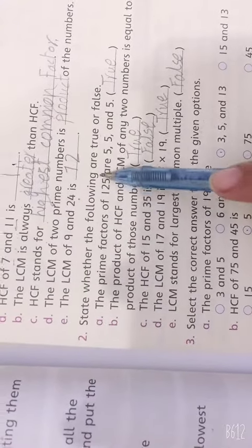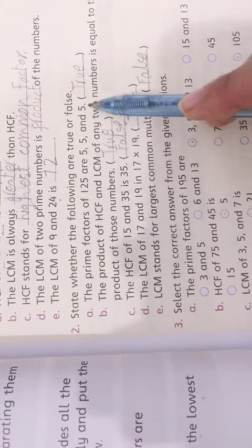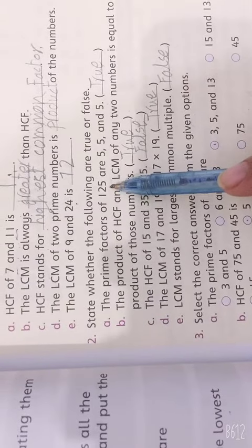State whether the following are true or false. The prime factors of 125 are 5, 5 and 5. It is true. Because it is 5. We will solve. Let's check it out.